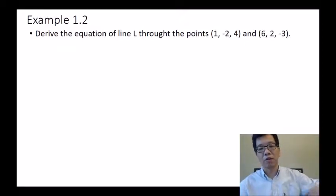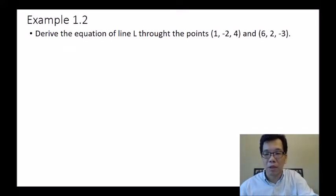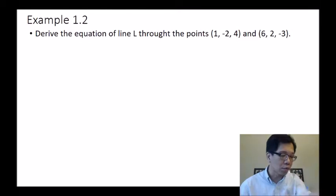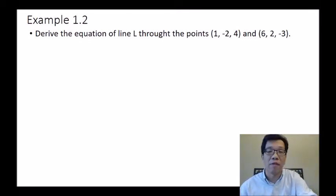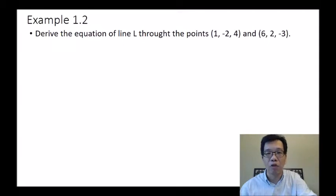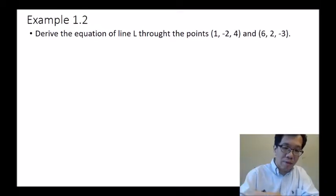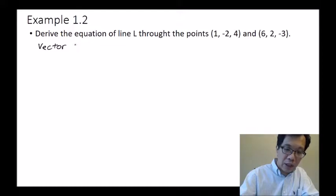For example 1.2, we want to derive the equation of a line L through the points (1, -2, 4) and (6, 2, -3). When solving this, we think of it as a vector — it always points in the same direction regardless of magnitude. A vector is defined as end point minus start point.